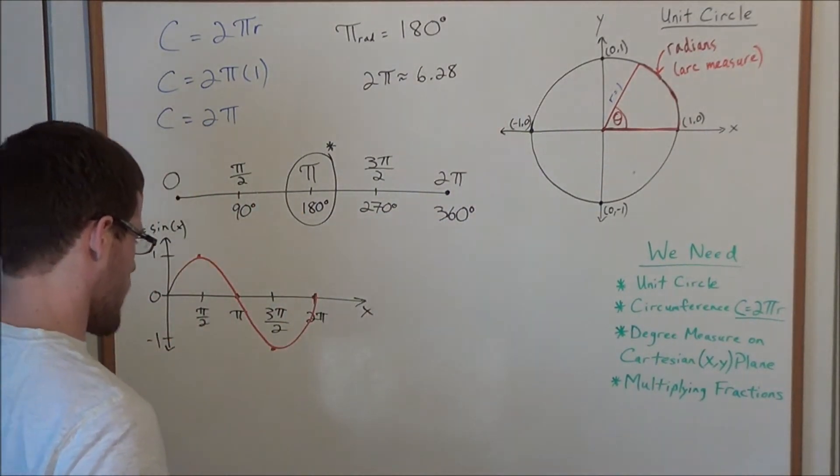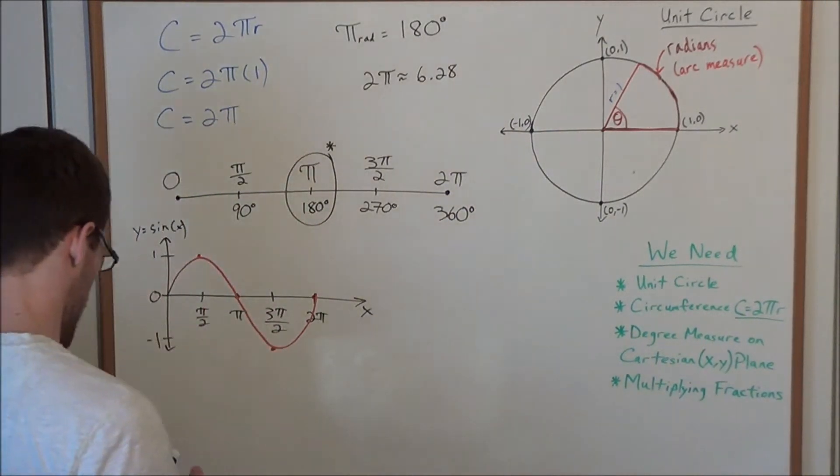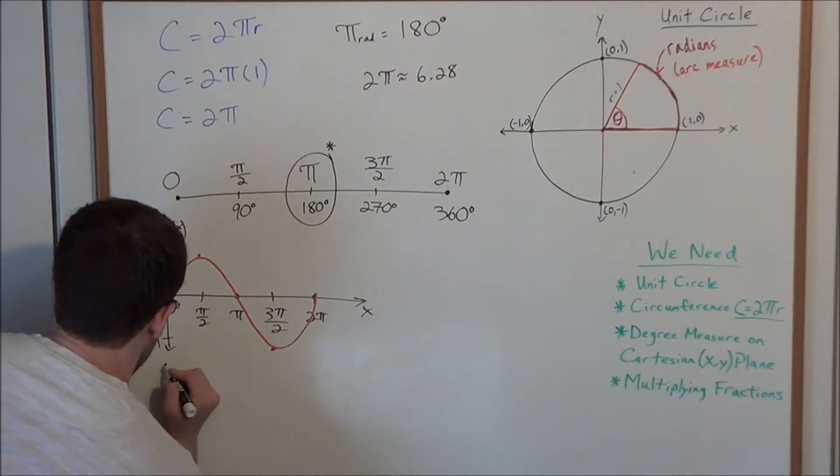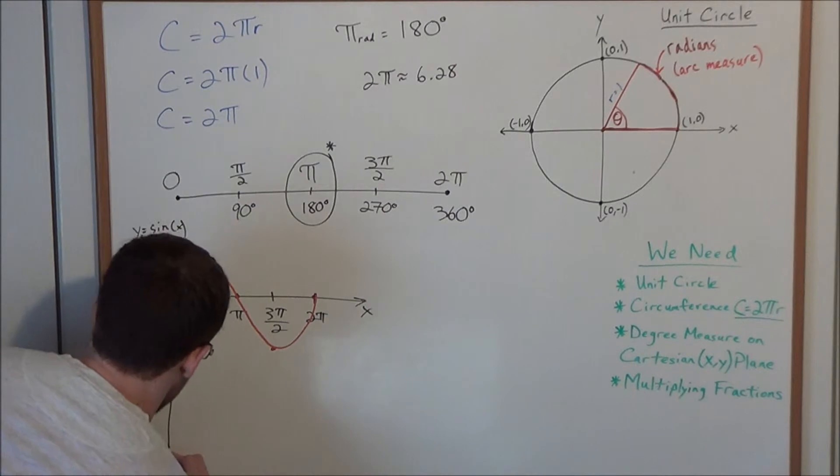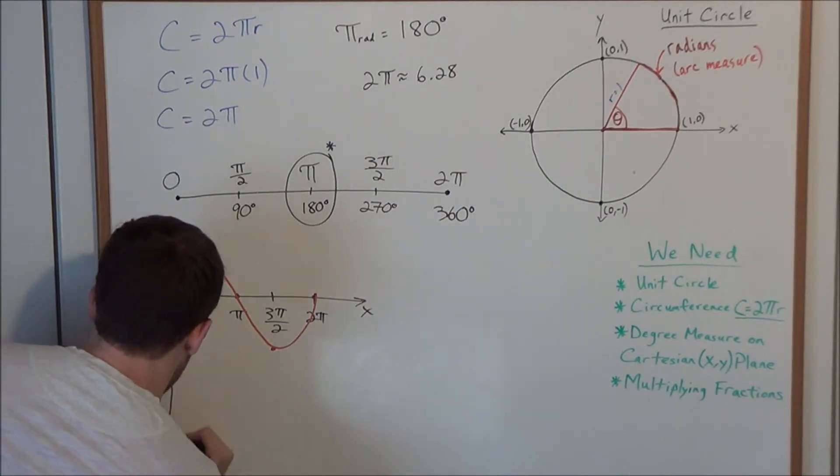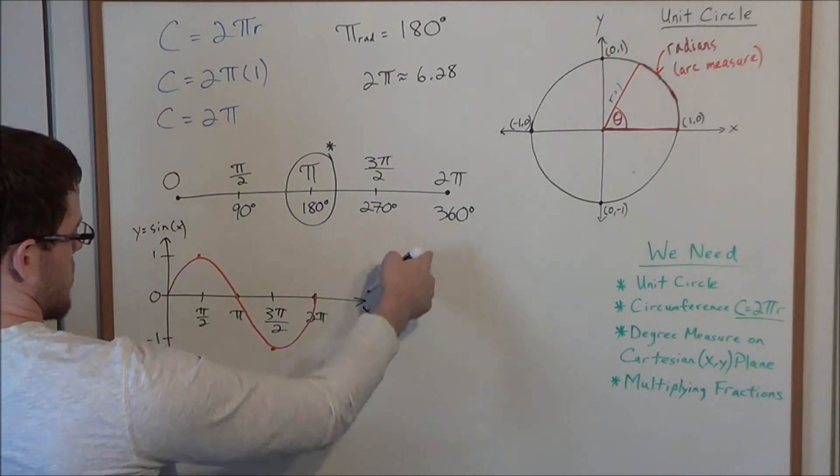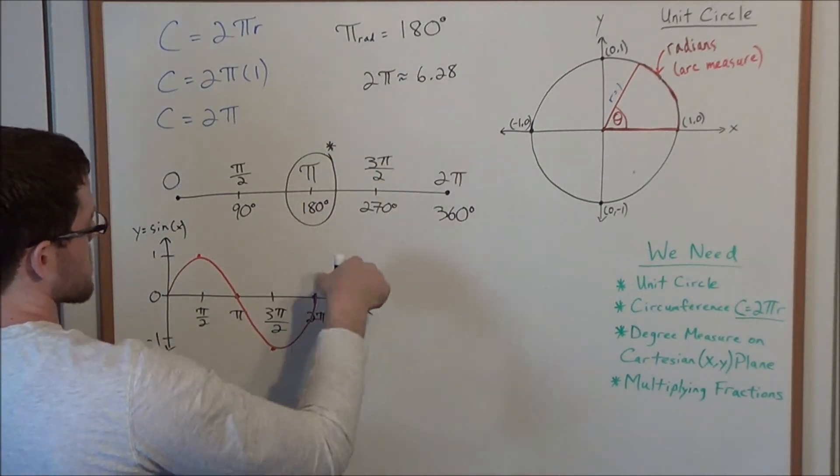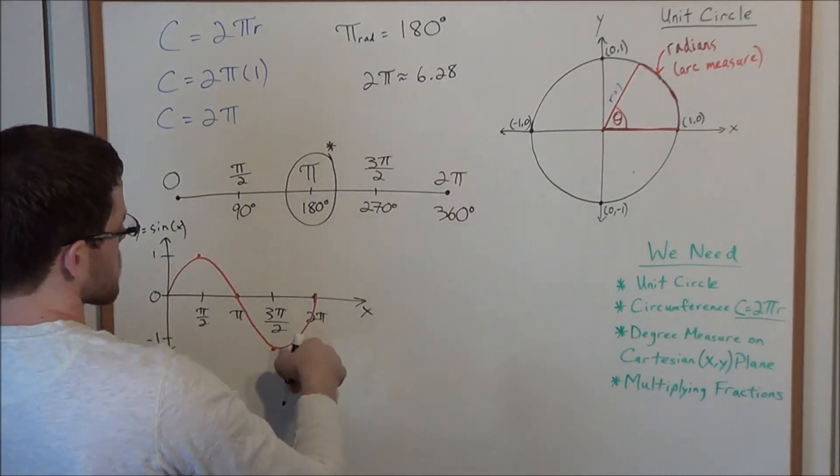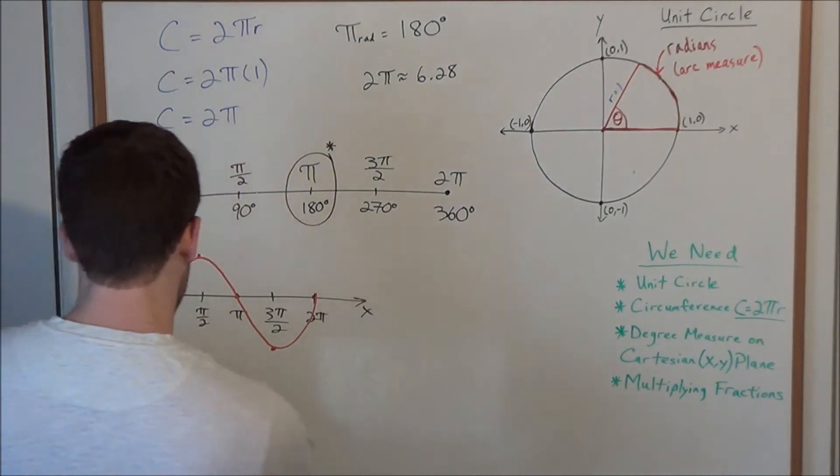But if we were to graph, and I'm not going to go through the whole graph, but let's say we graph the same function, so we're going from 1 to negative 1, but now we use degrees. Keep in mind, this scale goes up to 6.28 roughly when we use radians. But if we're going up to 360 degrees,